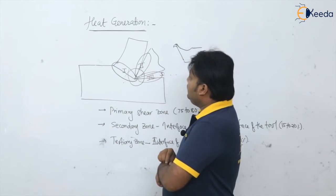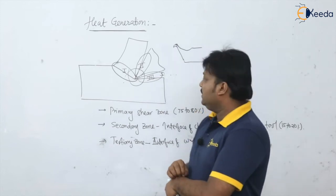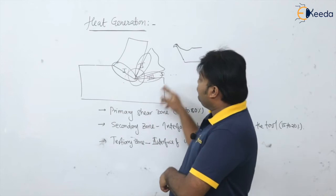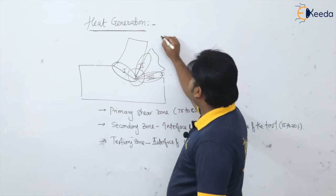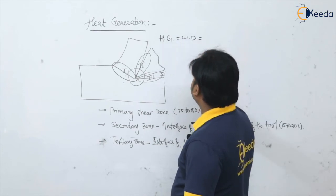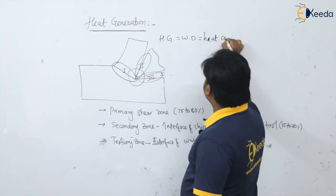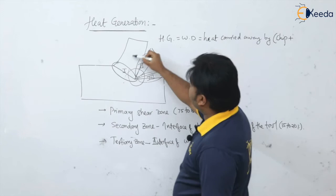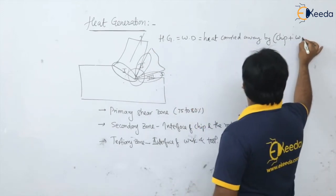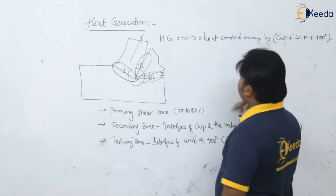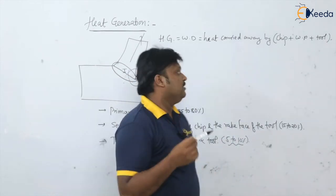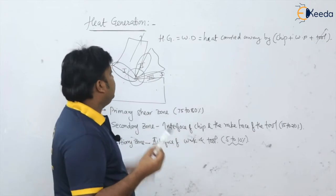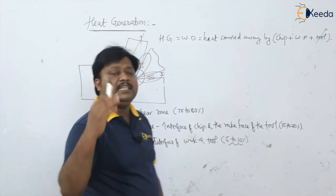Looking at the tertiary zone, the maximum heat is taken away by the workpiece compared to the tool, and less heat is carried out by the tool. Of the total heat generated in the metal cutting operation, it is carried away by the chip, the workpiece, and the tool. Heat carried away by the tool is actually very less — less than five percent — so we neglect it.